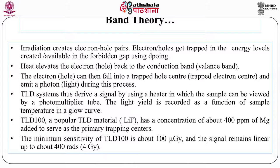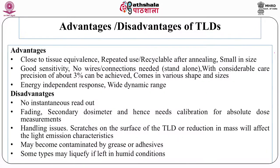There are many TL materials. TLD-100 is a popular TLD material based on lithium fluoride with about 400 ppm magnesium added as a primary trapping center. Its detection sensitivity is about 100 microgray. Disadvantages of TLDs include no instantaneous readout, fading (requiring calibration), need for calibration for absolute dose measurements, and handling issues — scratching on the surface may reduce mass or response, and contamination by grease or adhesive can change its response.